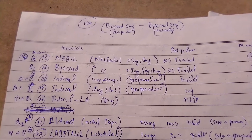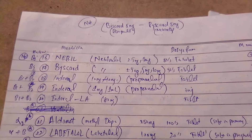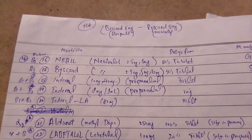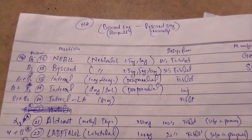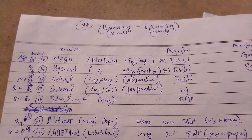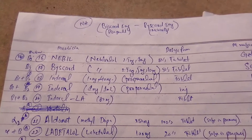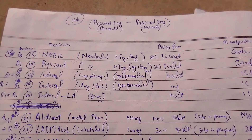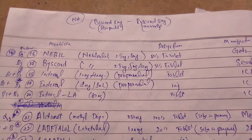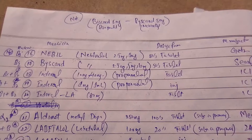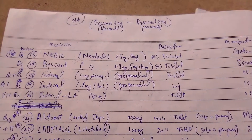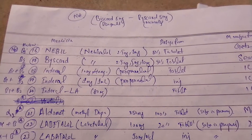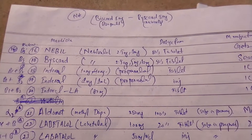This is the 16th medicine — Nabil. Its trade name is Nabil and the generic name is nebivolol, available in 2.5 mg and 5 mg tablets in the Pakistani market. Nebivolol is a selective beta-1 blocker.